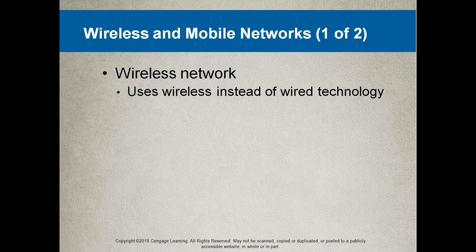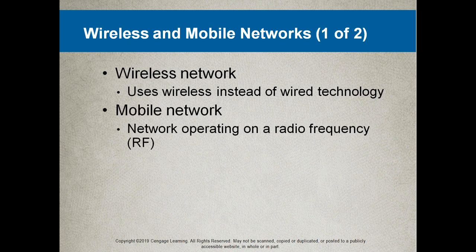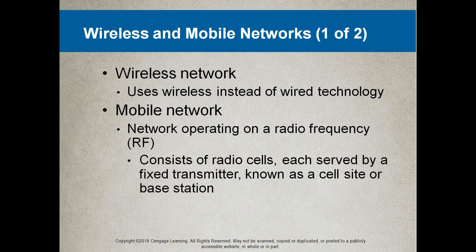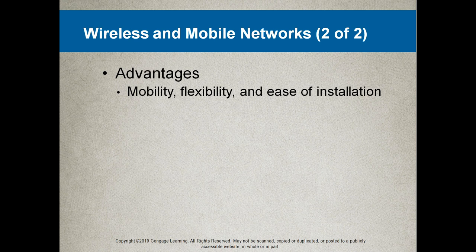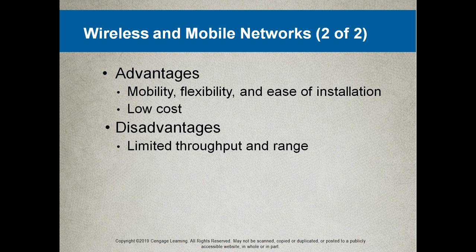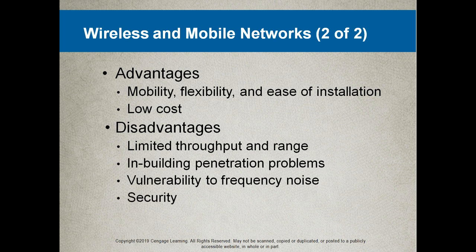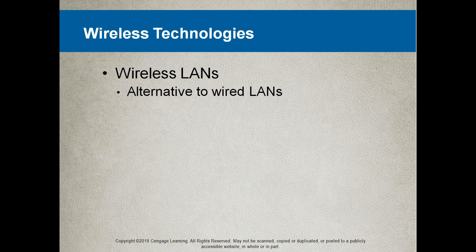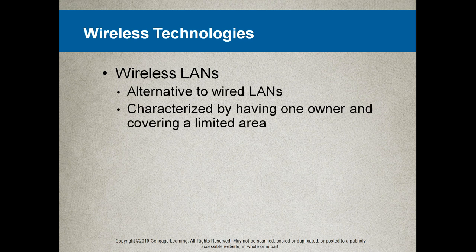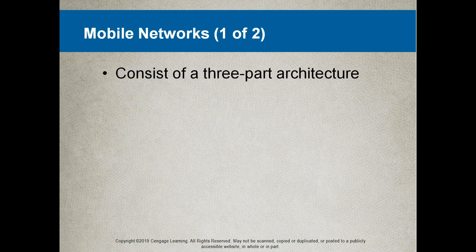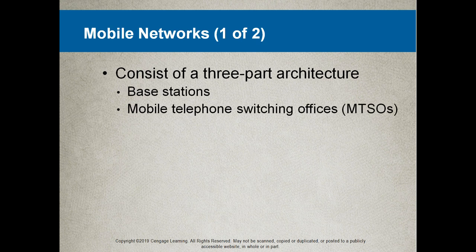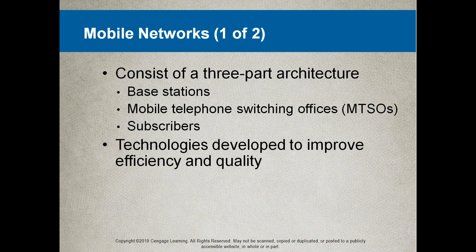A wireless network uses wireless technology instead of wired technology. A mobile network operates on a radio frequency and consists of radio cells each served by a fixed transmitter known as a cell site or base station. The advantages are mobility, flexibility, ease of installation and low cost. The disadvantages include limited throughput and range, in-building penetration problems, vulnerability to frequency noise and security issues. Wireless LANs are characterized by having one owner and covering a limited area, while wireless wide area networks cover a broader area.